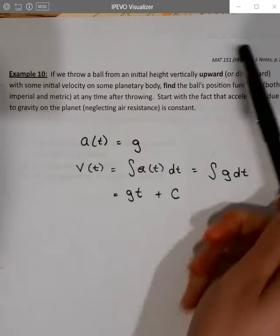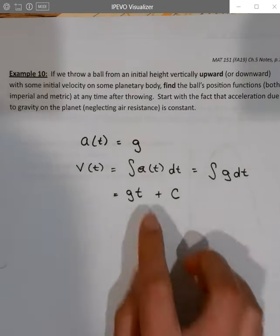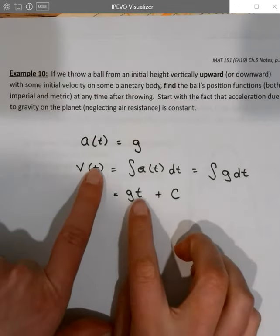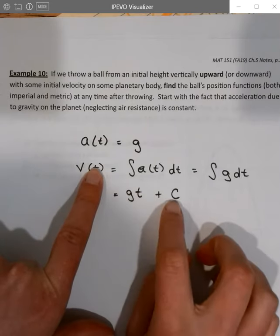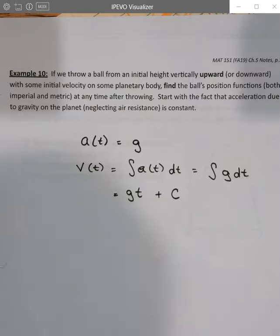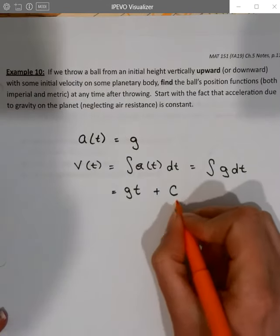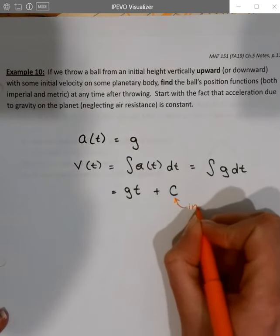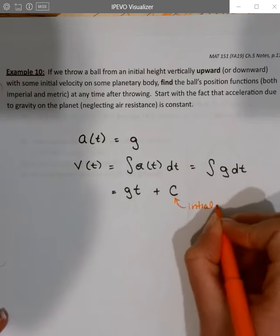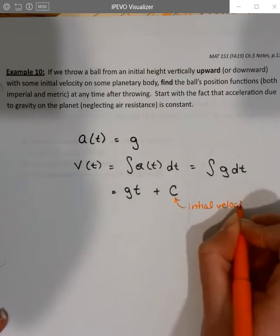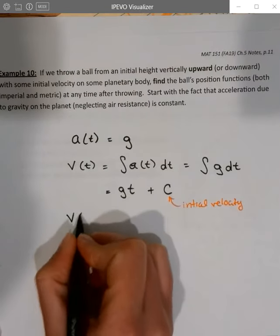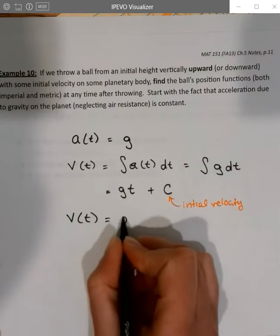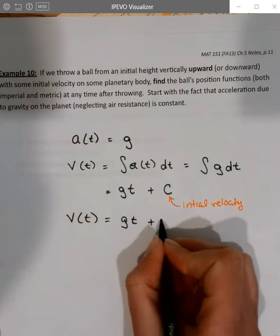Now another way to phrase c: if I plug 0 in for t, this is going to become 0. So whatever I get for c is the y-intercept or the initial condition for my velocity function. So we're just going to fill that in with v naught, our initial velocity.